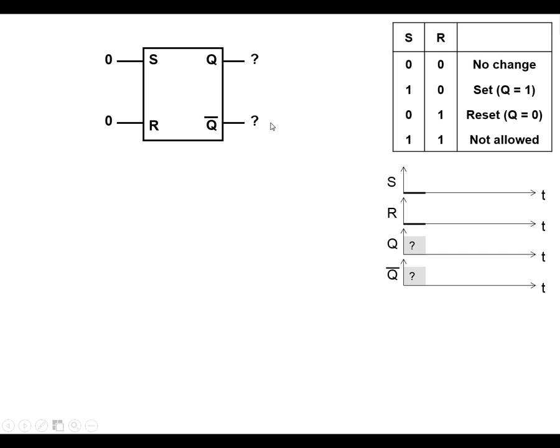Initially we don't know what Q and Q-bar are, they could be in any state when we switch on. If I make S go high, this is going to get us into the set state which means that Q is going to be set high as we've shown in the diagram, and Q-bar is going to be set low down there.